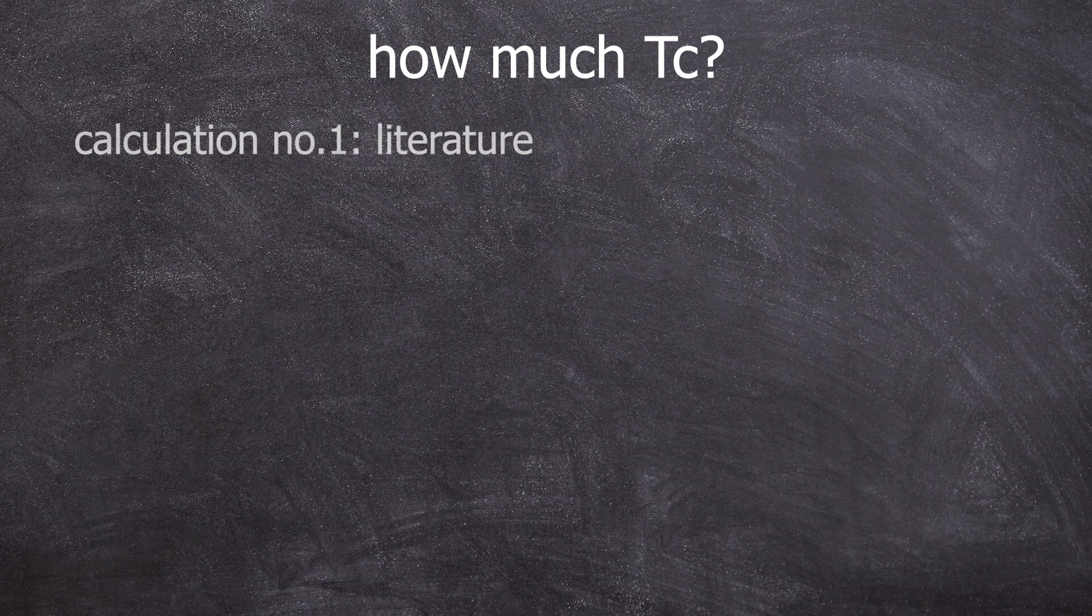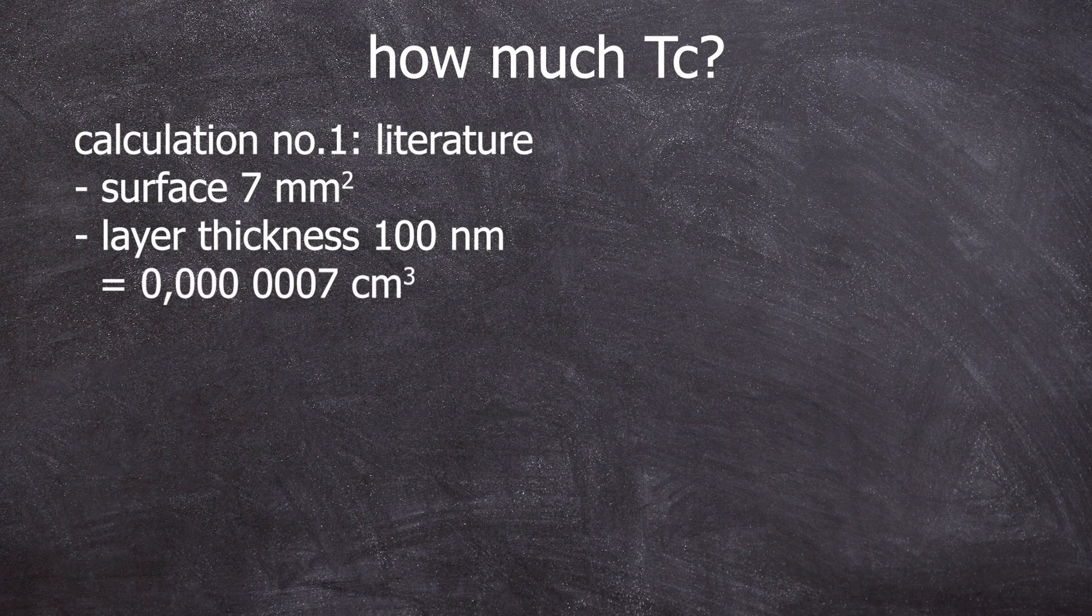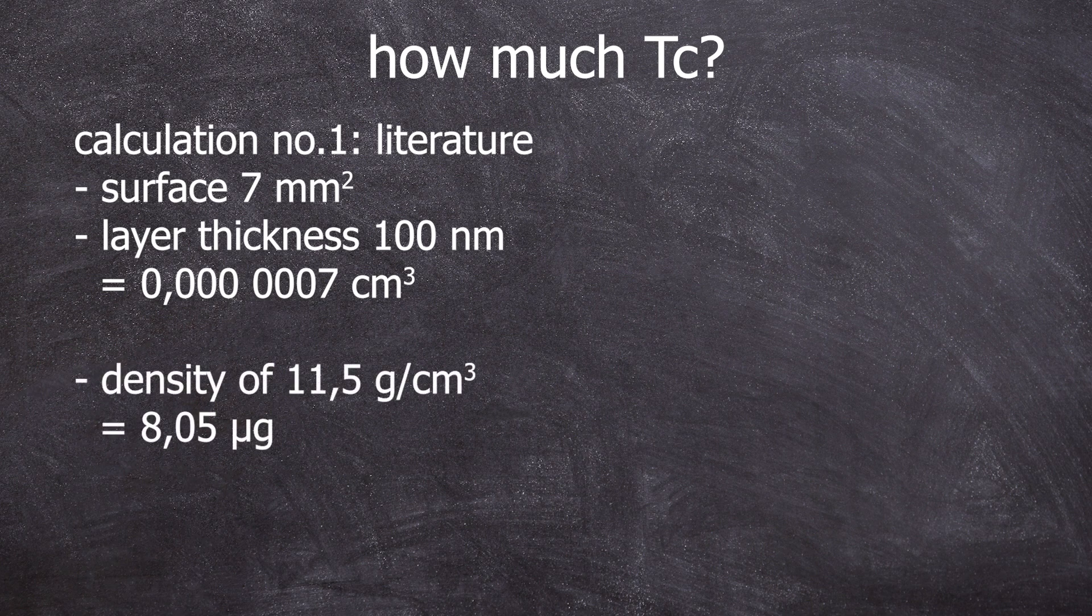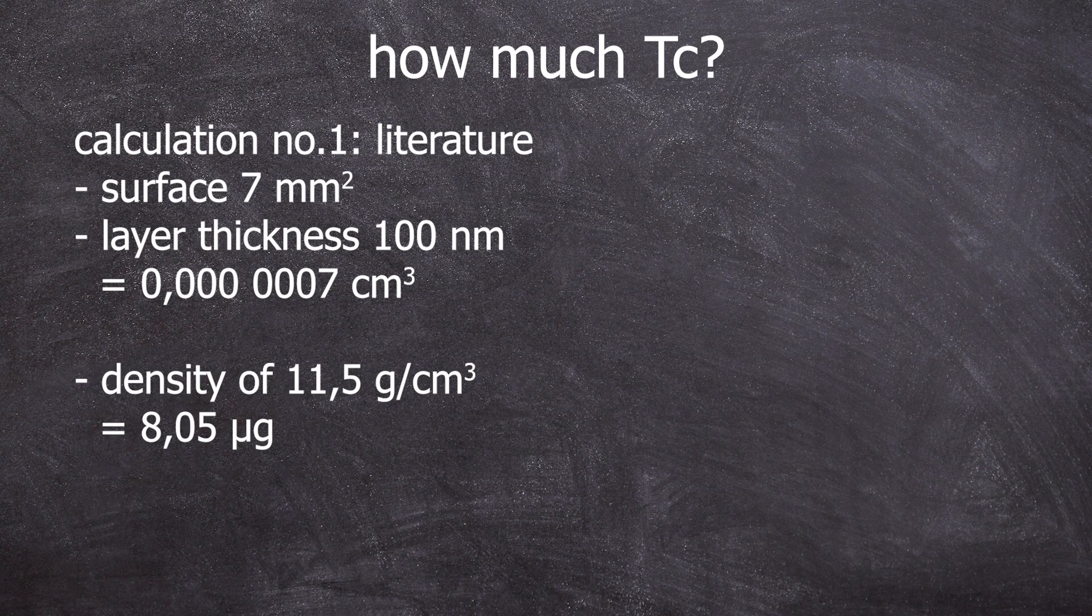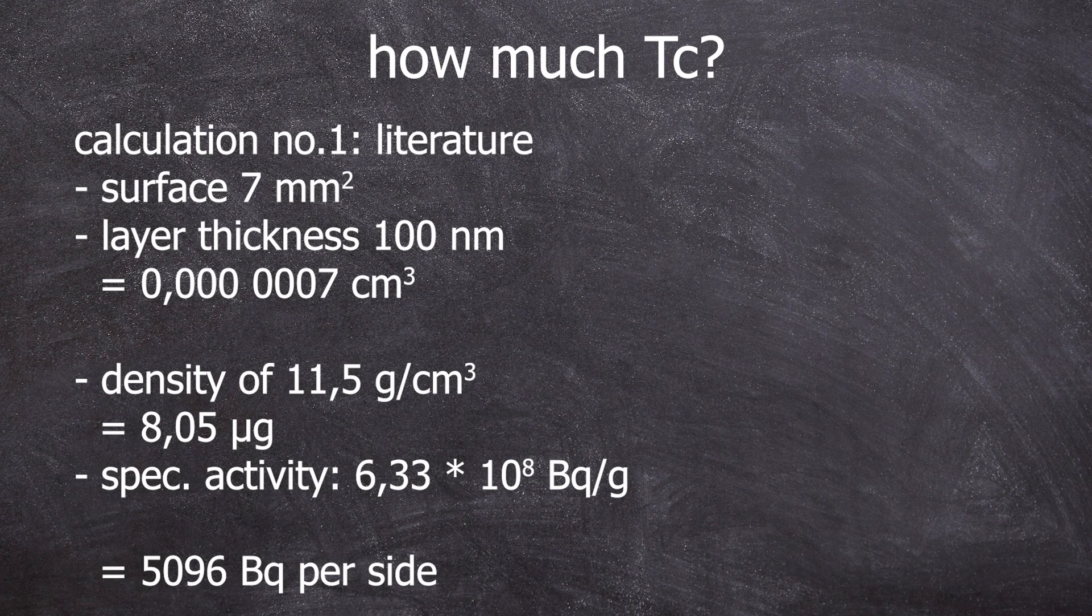Calculation number one, based on the literature. The sheet has a surface of 7 square millimeters. According to the microscope image, it is about 300 nanometers thick with technetium coated. That means we have about 0.0007 cubic millimeters of technetium. So 0.0007 cubic centimeters of technetium. With a density of 11.5 grams per cubic centimeter, we get 0.000000805 grams of technetium. With a specific activity of 6.33 times 10 to the power of 8 becquerels per gram, we have about 5096 becquerel per site. And since it's coated on both sides, you get about 10,191 becquerels of technetium-99.